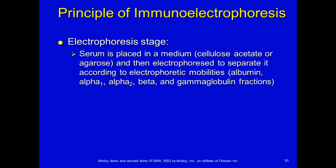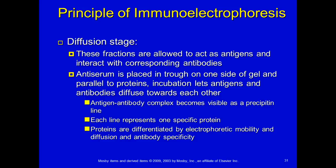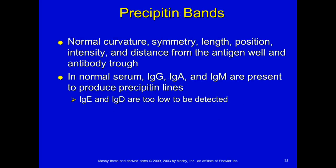In the diffusion stage, the fractions act as antigens and interact with antibodies. We take antiserum and place it in a trough on one side of the gel parallel to the proteins; incubation lets the antigens and antibodies diffuse toward each other. If an antigen-antibody complex forms, a precipitin line appears — each line represents one specific protein, differentiated by electrophoretic mobility and antibody specificity. These precipitin bands have normal curvature, symmetry, length, position, intensity, and distance from the antigen well. In normal serum you'll see IgG, IgA, and IgM; IgE and IgD should be too low to detect, but if they appear it could indicate an issue.